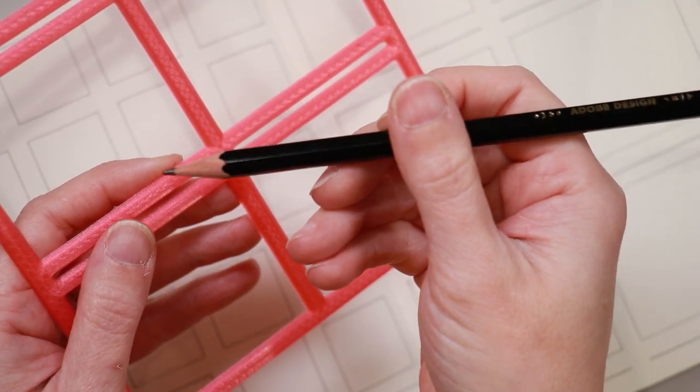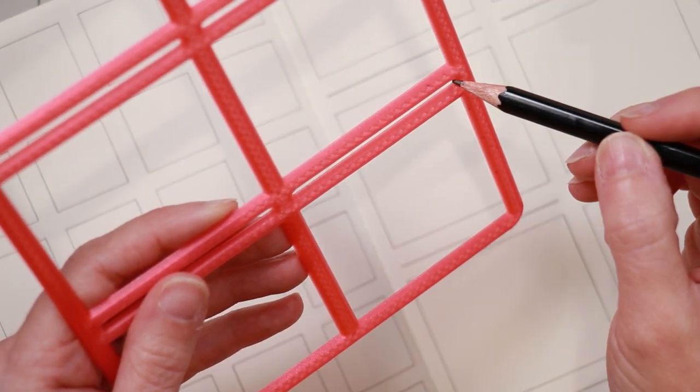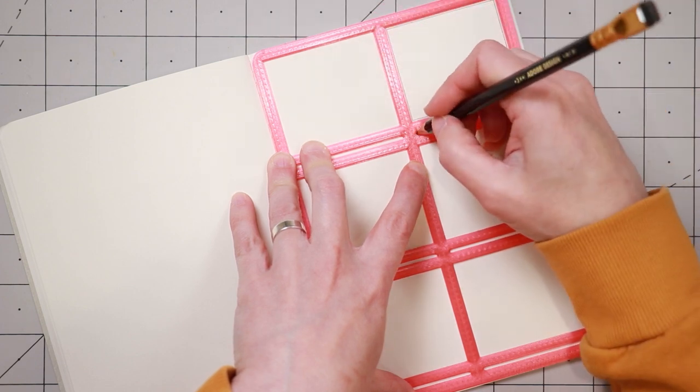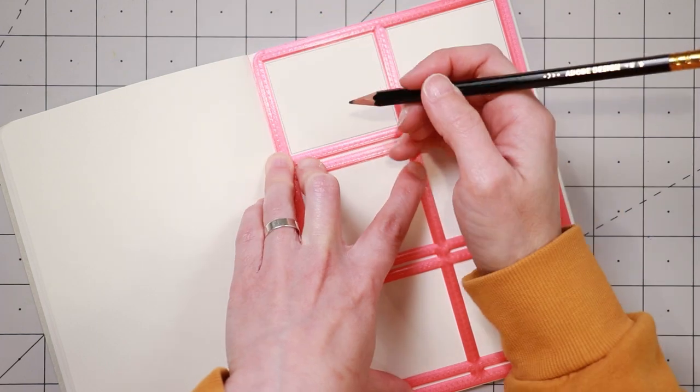Now I can use any pencil, even a wooden Blackwing pencil fits into that slot easily. And now I can set up the pages in my sketchbook for storyboards or thumbnails really quickly and get right to sketching.